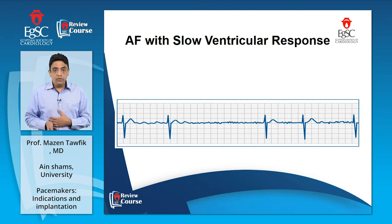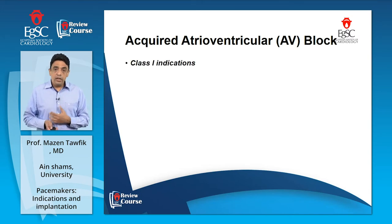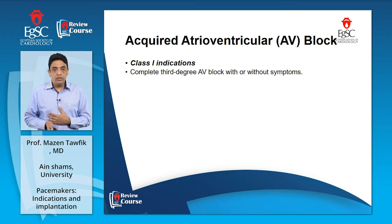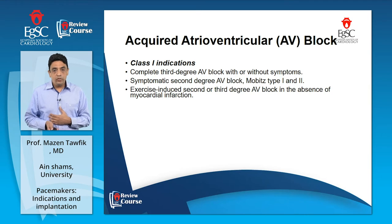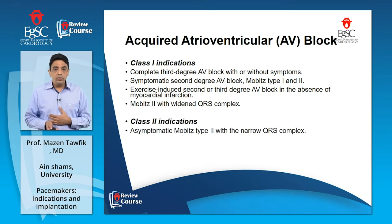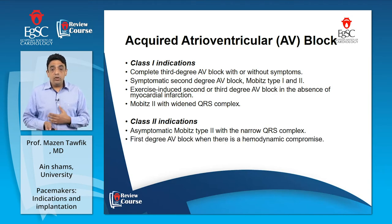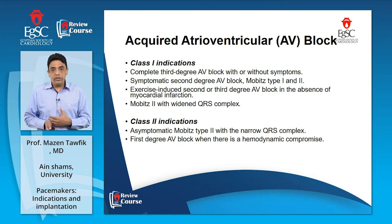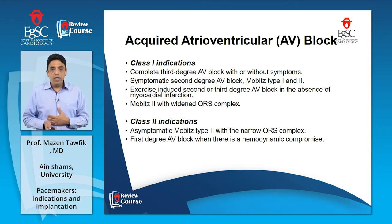Acquired AV block class I indications include: complete third degree AV block with or without symptoms — once diagnosed, pacing is indicated. Symptomatic second degree AV block, Mobitz type 1 or type 2. Exercise-induced second or third degree AV block in the absence of myocardial infarction. Mobitz type 2 with widened QRS complex, as most cases will progress to complete AV block. Class II indications include asymptomatic Mobitz type 2 with narrow QRS complex; first degree AV block with hemodynamic compromise due to AV desynchronization causing diastolic dysfunction; asymptomatic second degree AV block at intra- or infra-Hisian levels found on EP study; and symptomatic slow ventricular response in atrial fibrillation not related to medications.